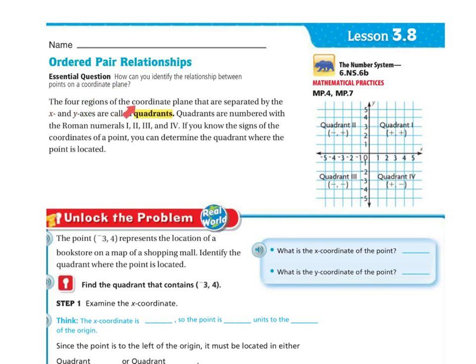The four regions of the coordinate plane that are separated by the x and y axis are called quadrants. Quadrants are numbered with Roman numerals 1, 2, 3, and 4. If you know the signs of the coordinate points, you can determine the quadrant where the point is located. Quadrant 1 is positive, positive. Quadrant 2 is negative, positive. Quadrant 3 is negative, negative. And quadrant 4 is positive, negative.